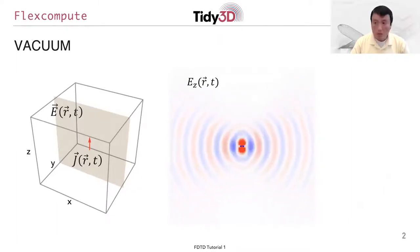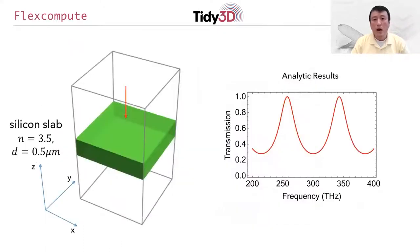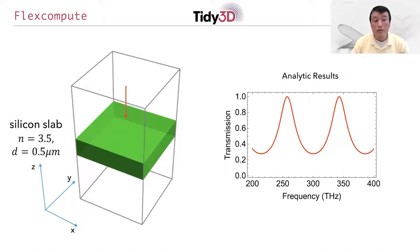In this video, we're going to take a step further and show how you can use the FDTD method to get information that you usually care about in device design. Here we're showing a particularly simple example where we're going to try to get the transmission spectrum through a dielectric slab. In our example, the dielectric slab is made of silicon with an index of 3.5 in the infrared wavelength range and with a thickness of half a micron. We will be sending light propagating normally incident upon the silicon slab along the z-axis and try to compute the transmission.